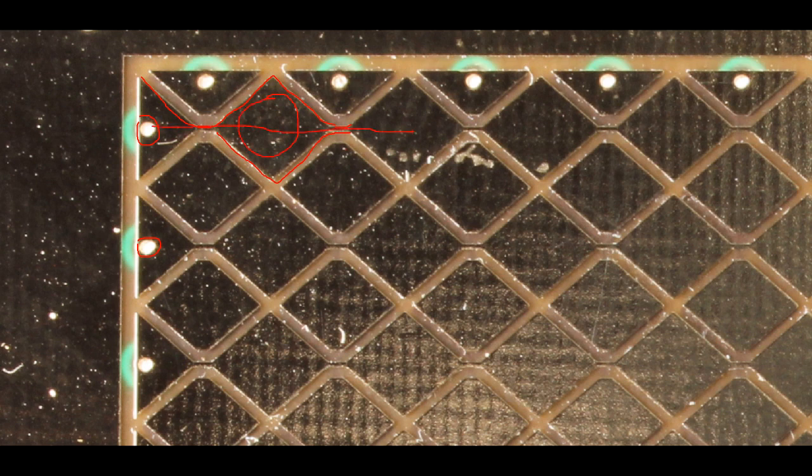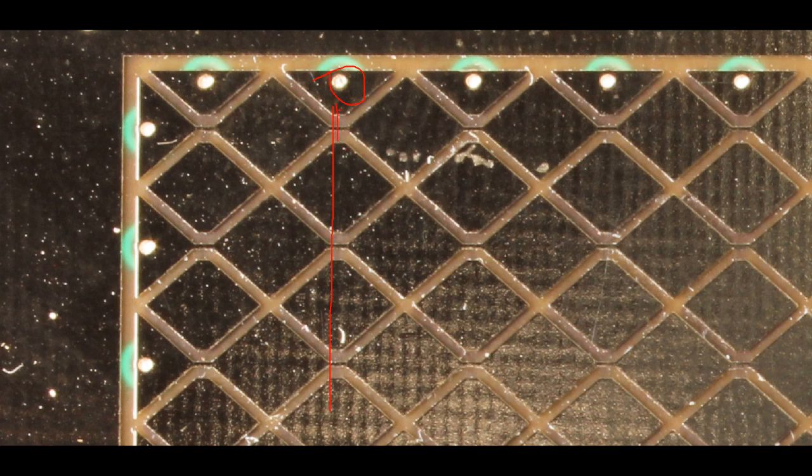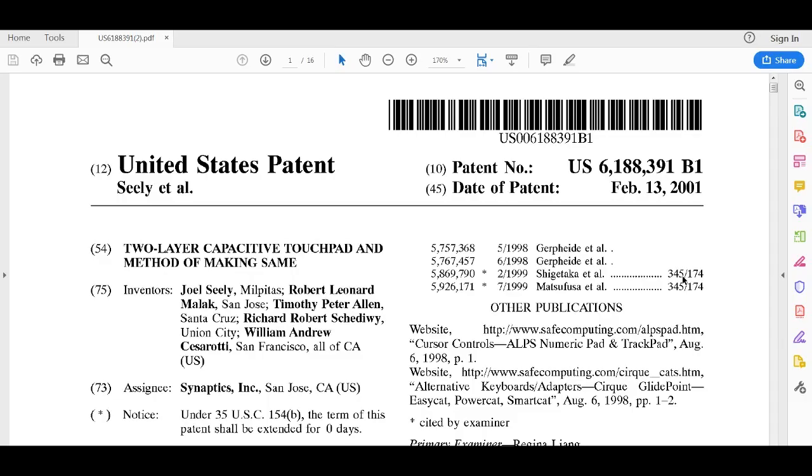And of course that forms a series of rows along the array. Now for the columns it's kind of interesting. The V is there as well of course. I'll just circle one here so we can make sure we know what I'm looking at. But of course if you look downwards here there's a series of diamonds still but there's no trace because the trace went past here which would short out. Now you might think it must be just on the other side of the circuit board but not so actually. Lots of interesting cost savings always in the personal computer market. And if we open up the patent that's associated with that, you can see that a two-layer capacitive touchpad and method of making the same. That's the title of the patent.